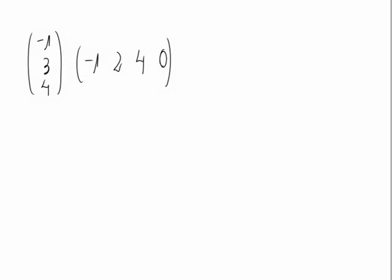Let's calculate the product of the matrices we see on the screen. We have to multiply a matrix with 3 lines and 1 column by a matrix that has 1 line and 4 columns. The number of columns of the first matrix is the same as the number of lines of the second matrix, which means we can perform this product and we will obtain a matrix with 3 lines and 4 columns.